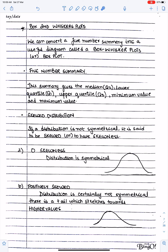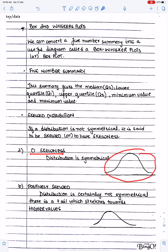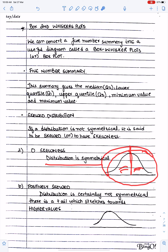If a distribution is not symmetrical, it is said to be skewed or to have skewness. When distributions are symmetrical, they have zero skewness — there is equal area on the left side and right side, and this is the line of symmetry.